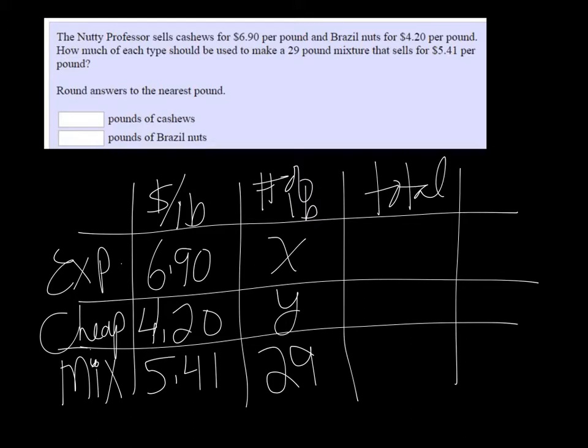But if I multiply the number of pounds by the price per pound, then I'll get the total. So this will be 6.9X, and this will be 4.2Y.